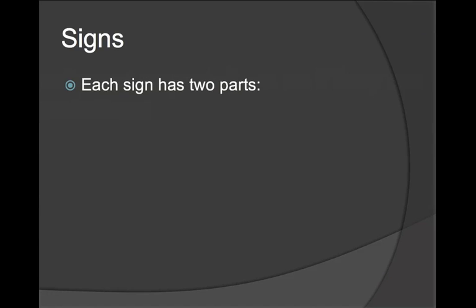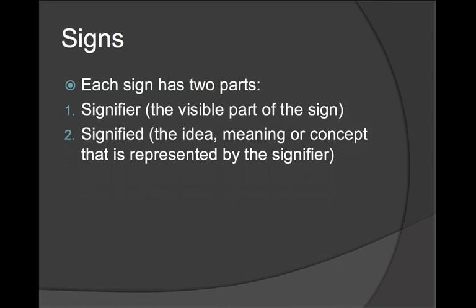Signs. This is where we're moving on to a bit more work on the signs in a text. In a text each sign has two parts. The signifier, the visible part of the sign, the thing we can see. And what it signifies, the signified, the idea, meaning or concept that is represented by the signifier. We will do examples of these in class so don't worry. But I just want you to know what the word terminology is so when we do it in class you won't be so shocked.